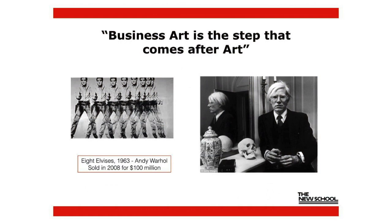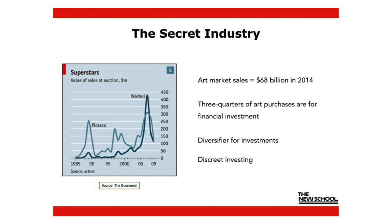Hirst was really brilliant — he combined an antiquity, an 18th-century skull, with over 8,000 diamonds. This is Andy Warhol, the father of what's called business art. He had great foresight in the 1960s when he said that business art is the step that comes after art. The industry is now called the secret industry because there's no transparency of information. Yet it accounts for $68 billion of the luxury goods market — about a quarter of the entire global fashion and apparel market.